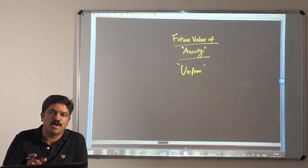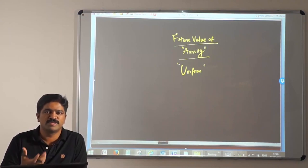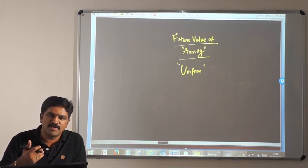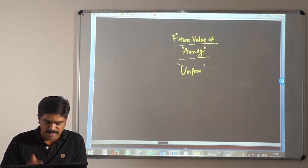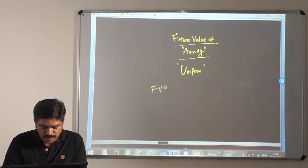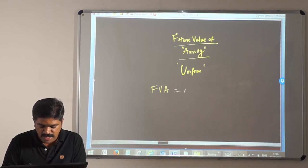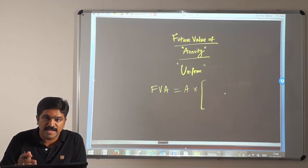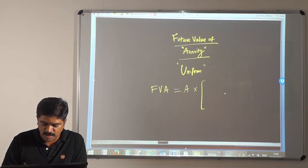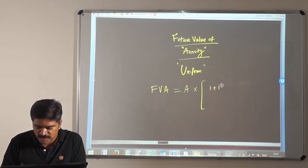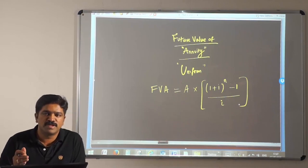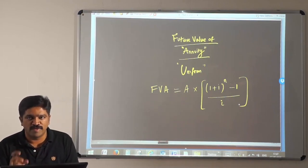In such cases, how do we find the future value? We know the future value of a single cash flow can be found using a simple formula when compounded, but in case of uniform cash flows we use a different approach. The formula for future value of annuity is: Annuity (A) multiplied by [(1 + i)^n − 1] divided by i.